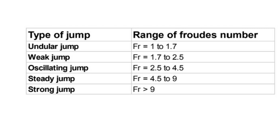Firstly, we need to find out the Froude number using the formula: Froude number equals V divided by the square root of (g·d), or V divided by the square root of (g·y). From that, we classify the type of hydraulic jump. Thank you, friends.